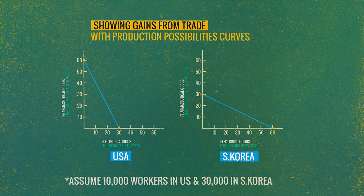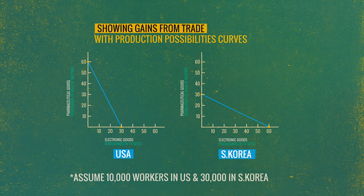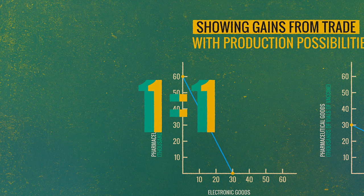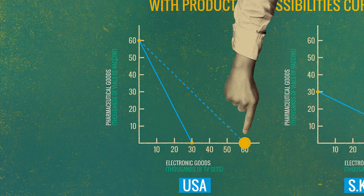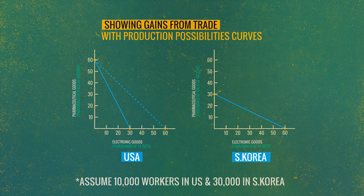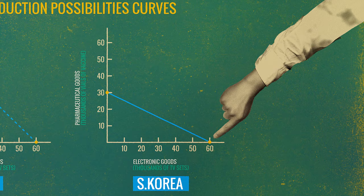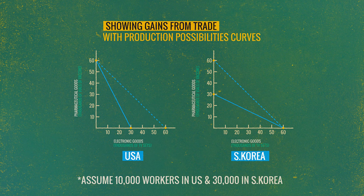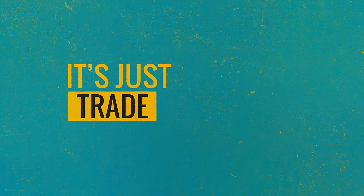Now let's consider trade. If the U.S. specializes in vaccines, it produces 60,000 vaccines. Trading at a one-to-one ratio, it can exchange vaccines for TVs, allowing it to consume more TVs and more vaccines than its production possibility curve alone would permit. The same is true for Korea. If Korea specializes in TVs, it produces 60,000 TVs, then trades one-for-one with the U.S. to get up to 60,000 units of vaccine. Its consumption possibilities are greater than its production possibilities — it's almost like a new technology has been invented. It's not a new technology — it's just trade.